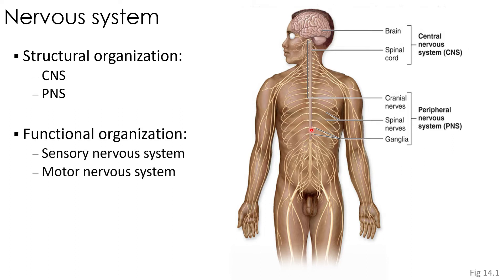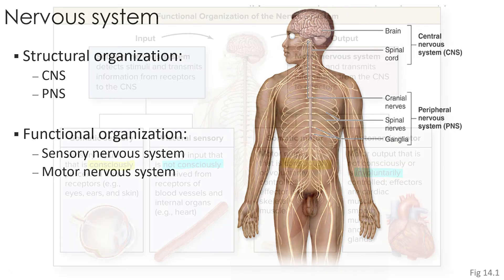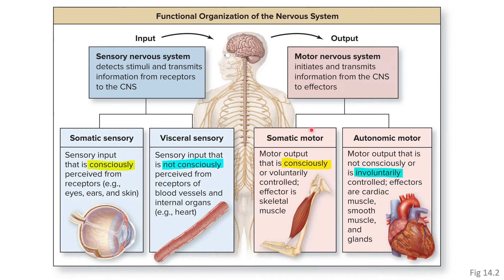The nervous system can also be classified based on functional organization. It can be divided into the sensory nervous system and the motor nervous system. The sensory nervous system detects stimuli and transmits that information from receptors to the CNS, while the motor nervous system initiates and transmits information from the CNS to the effectors in the peripheral nervous system.